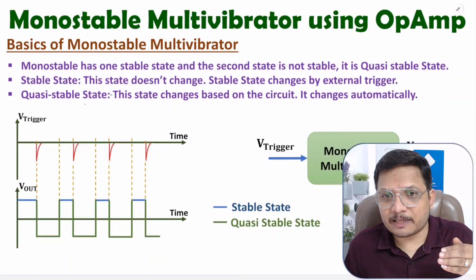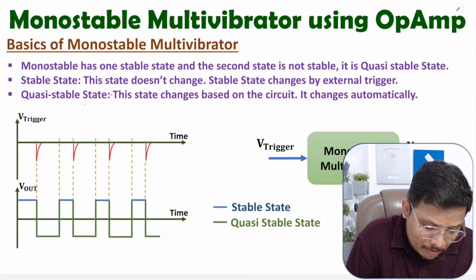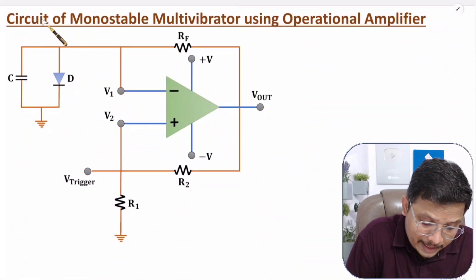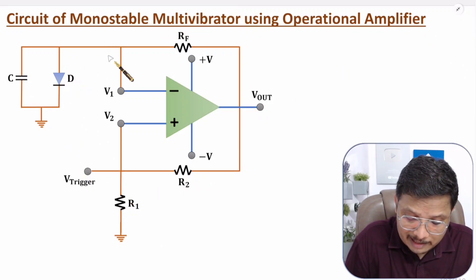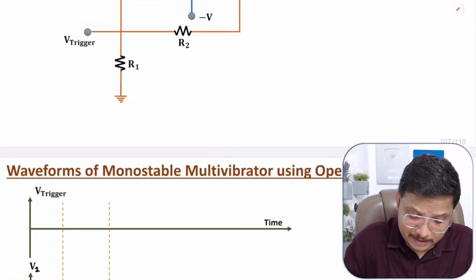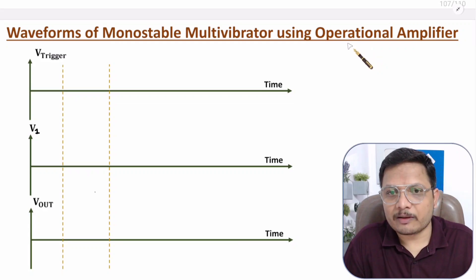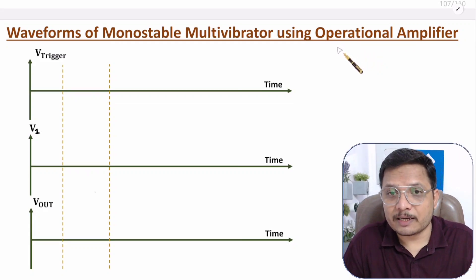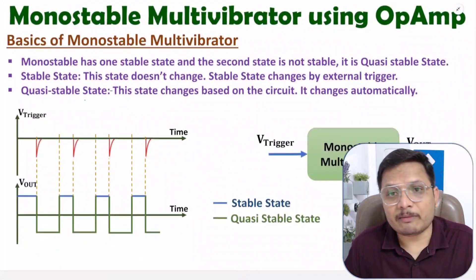Before I start with the explanation, let me show you how many things I'm going to cover in this video. First, I'll be discussing about basics of monostable multivibrator. After that, I'll explain you the circuit of monostable multivibrator using operational amplifier. With this circuit, I'll be deriving the output equation. And based on the output equation, I'll explain you the working and waveforms of monostable multivibrator, so you will get to know how exactly it functions.